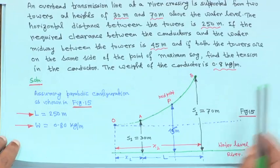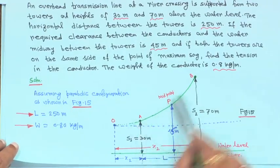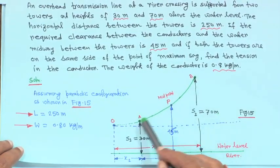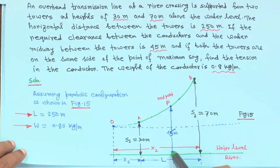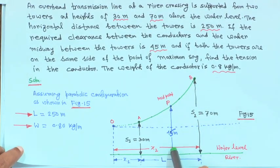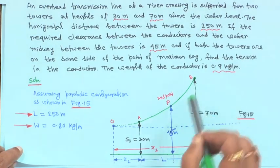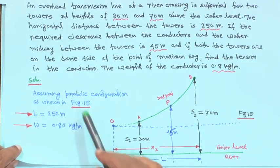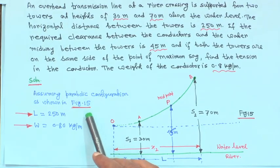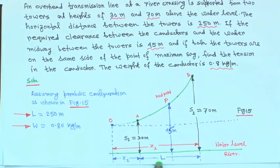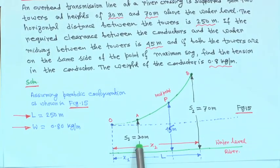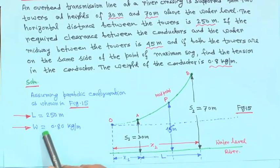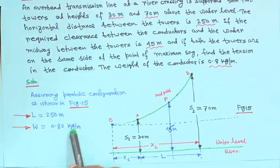This is the diagram. Point A and point B, and from the water level the midpoint height is 45 meter, from here to here it is 30 meter, and from here to here it is 70 meter. We are assuming that it is a parabolic configuration. Length L is given as 250 meters, S1 is 30 meter, S2 is 70 meter, and W is 0.8 kg per meter.